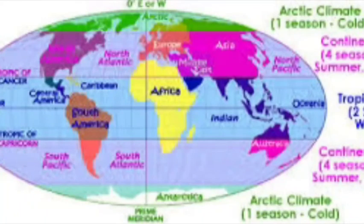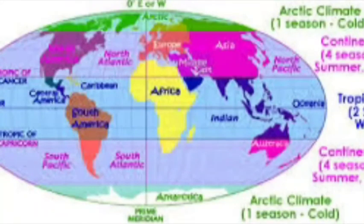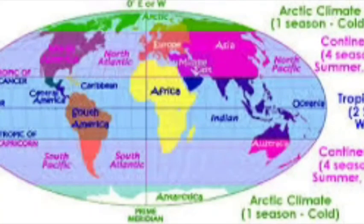You can see on the map that the cold areas are the Frigid Zones. The zone in between is the Temperate Zone, and on both sides of the equator is the Torrid Zone.